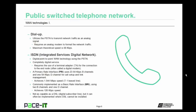Then there's ISDN — Integrated Service Digital Network. ISDN is a digital point-to-point WAN technology that utilizes the PSTN. It's a completely digital service that requires the use of a terminal adapter, or TA, to make the connection to the end nodes. This TA is often called a digital modem, but it's actually a terminal adapter. ISDN can use a Primary Rate Interface, or PRI, composed of 23 64-kilobits-per-second B channels and one 64-kilobits-per-second D channel. That D channel is used for call setup and link management. A PRI can achieve 1.544 megabits per second speed — commonly referred to as a T1 leased line.